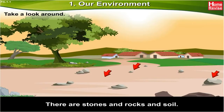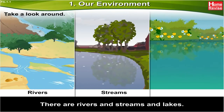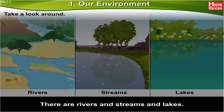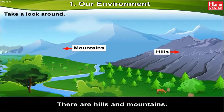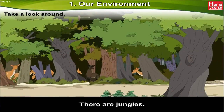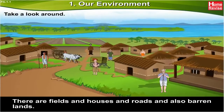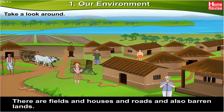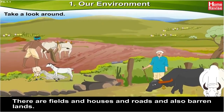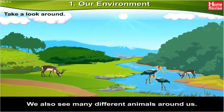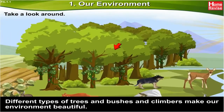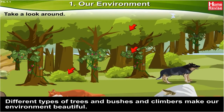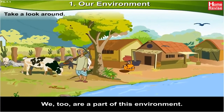soil, rivers, streams, and lakes, air, hills and mountains, jungles, fields, houses, roads, and also barren lands. We also see many different animals around us. Different types of trees, bushes, and climbers make our environment beautiful. We too are a part of this environment.